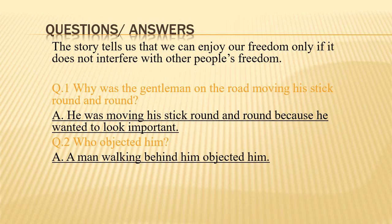Question number two: Who objected to him? The answer is: A man walking behind him objected to him. Students, note that the questions are in past tense — question number one is in past tense, so we write the answer in past tense. Likewise, question number two is also in past tense, so the answer should be in past tense.